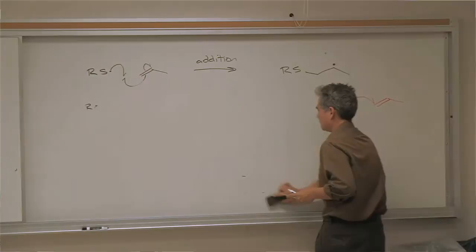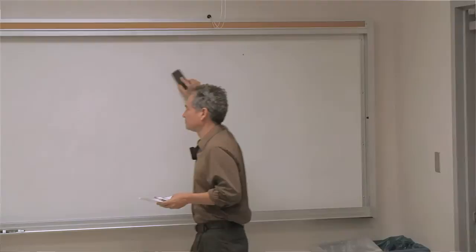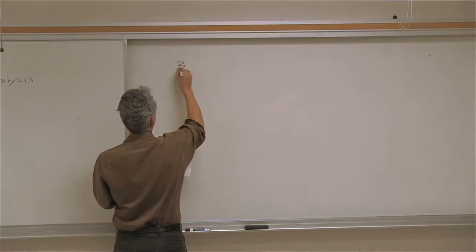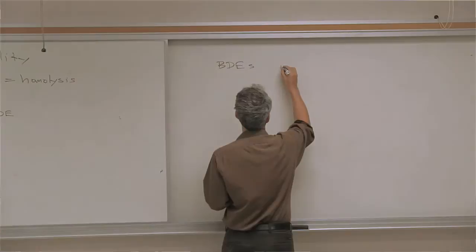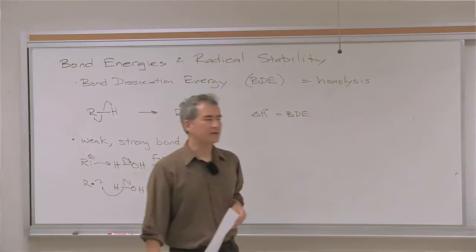Bond dissociation energies are very powerful for estimating what types of reactions are enthalpy favorable. There's a simple way to account for enthalpy changes: sum up all the bonds broken and subtract all the bonds formed to get an estimate of enthalpy change. For radical chemistry, if you look at bond dissociation energies and compare them — for example, for bonds to hydrogen — they tell you about radical stability and the stability of the X-dot fragment.